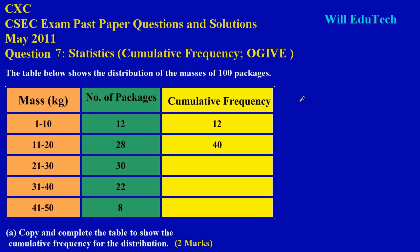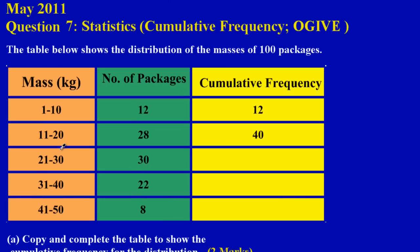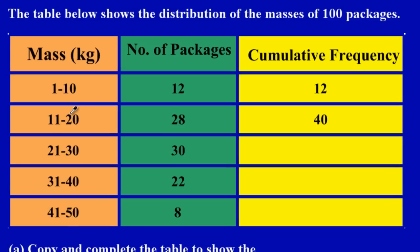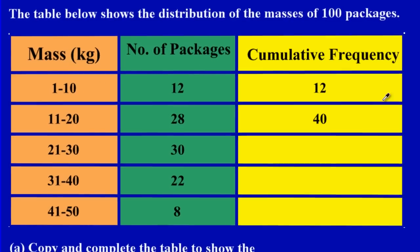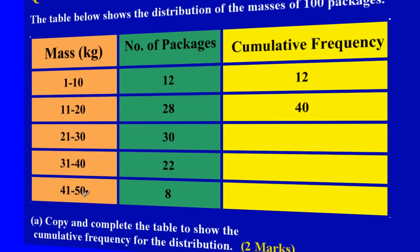In this question, it states the table below shows the distribution of the masses of 100 packages. In my first column to the left I have the masses in kilograms, the second column I have the number of packages, and the third column I have the cumulative frequency. In part A of question 7, they're asking us to copy and complete the table to show the cumulative frequency for the distribution, and that's an easy two marks in the exam.